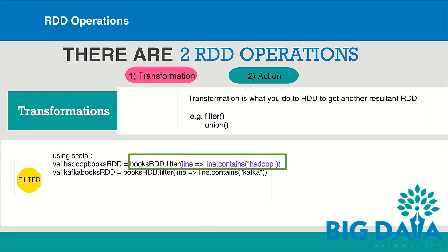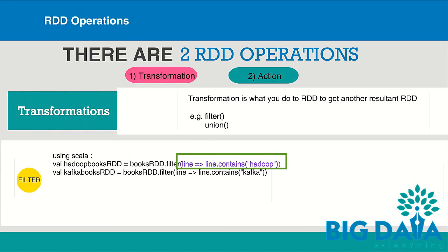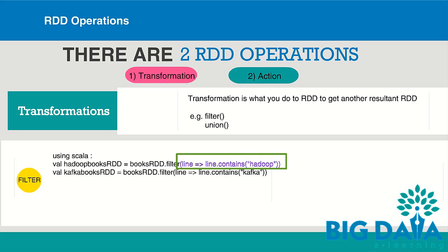A function literal is passed to the filter transformation. If you're unfamiliar with function literals, it is like an unnamed function or anonymous function. It doesn't contain a function name — it only has input parameters and a function body, so all it knows is what needs to be done when an input is fed into it.